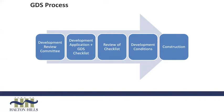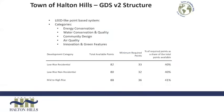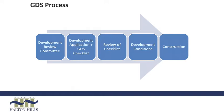They have different types of points available and different minimum points required to conform with the green development standards. You need to achieve about 40% of the total points in order to be deemed in compliance. In terms of the process, we work with developers throughout to ensure they can comply. This begins with a development review committee meeting where we sit down with potential applicants and go over the requirements. All town departments are part of this process and we let them know about their responsibility to conform. They prepare a checklist as part of their development application, which we review to make sure all elements are demonstrated as much as possible.